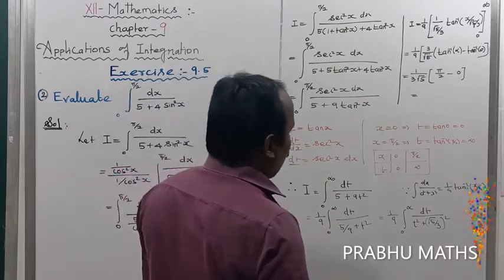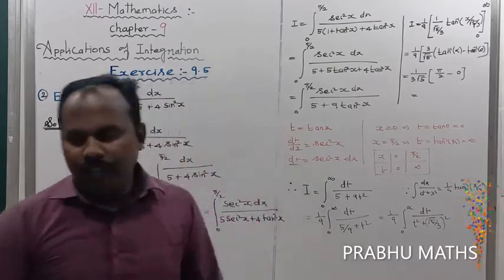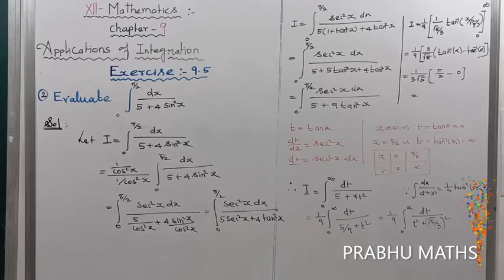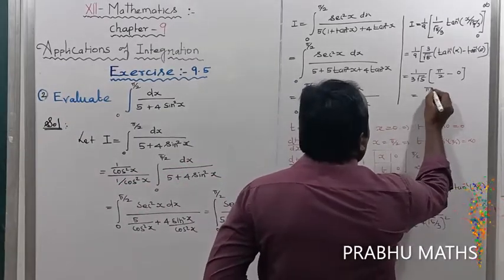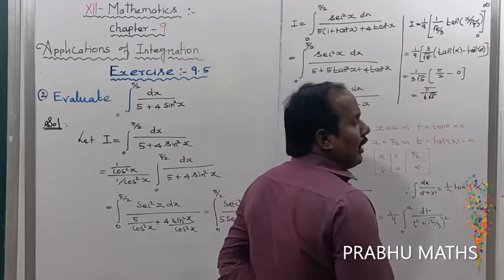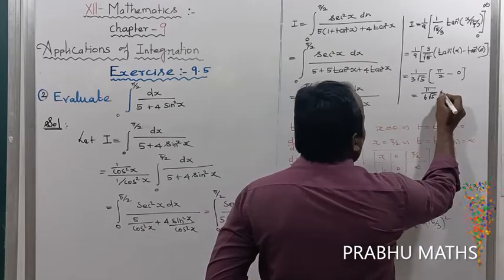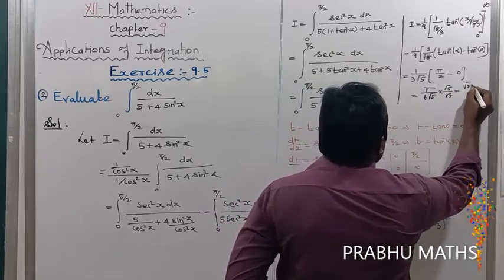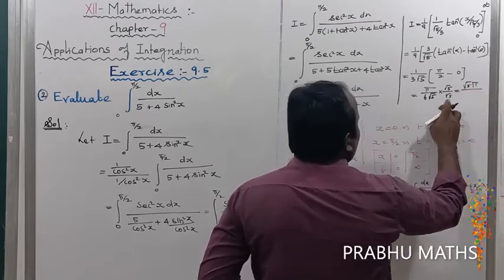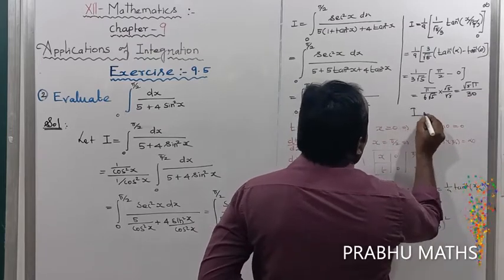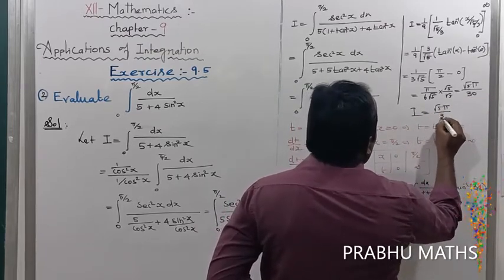Since the irrational number root 5 in the denominator is not acceptable, multiply numerator and denominator by root 5. So I equals root 5 times pi divided by 6 times 5, which gives root 5 pi divided by 30. Therefore, the final answer is I equals root 5 pi divided by 30.